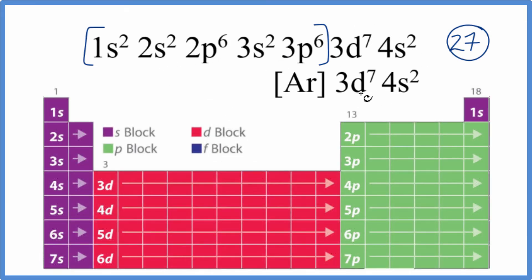So we're looking for something that ends in 3d7, 4s2. And note that sometimes with these configurations, you'll see the 4s2 written before the 3d. Just something to be aware of.